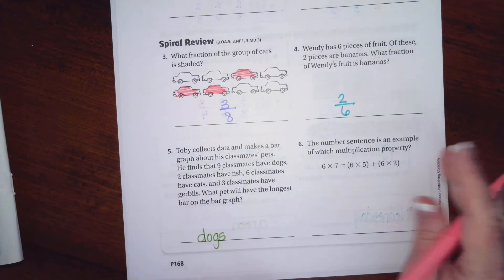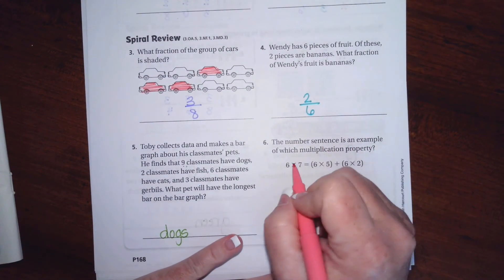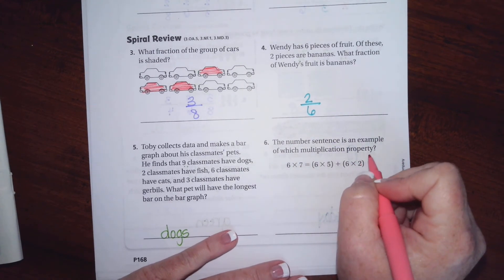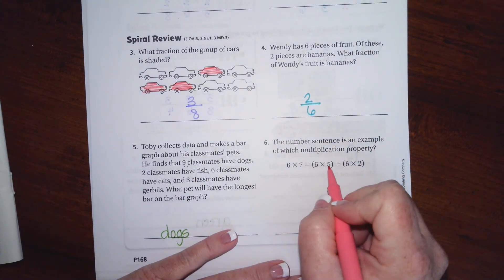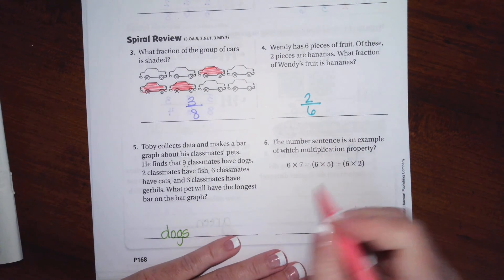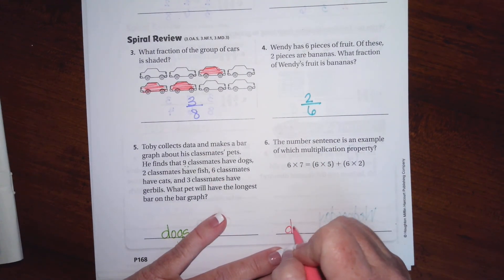And the number sentence is an example of which multiplication property? You see, all it did is break up the seven into five and two, which means it will be the distributive.